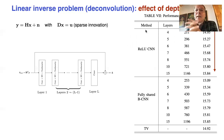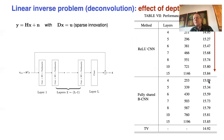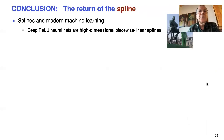Looking at the effect of depth: with ReLU, adding more and more layers reaches an optimum and then nothing more happens. Using more layers with our deep splines also eventually reaches the same optimum. But importantly, we can do better than ReLU with fewer layers — and that's significant.